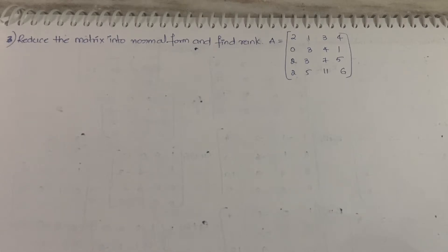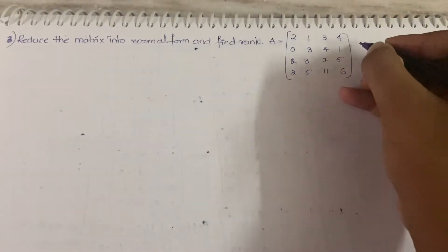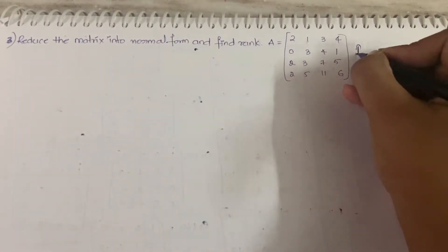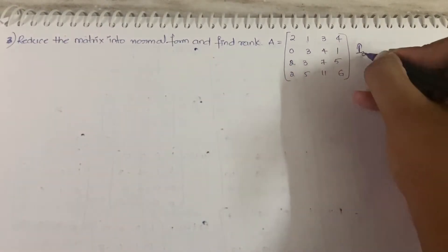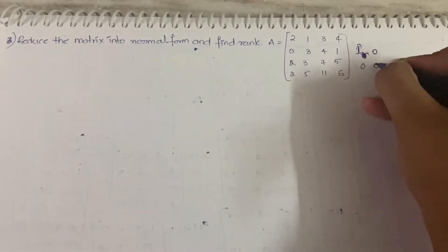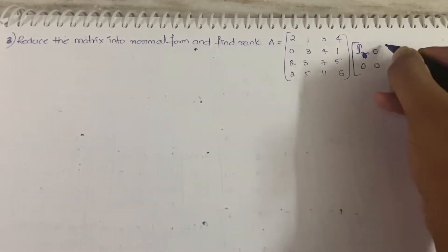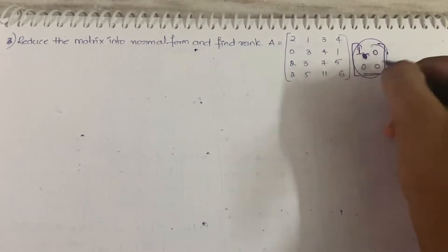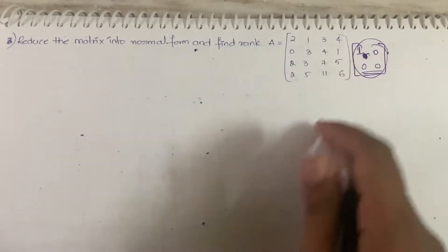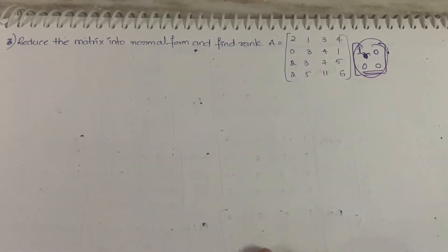You know what a normal form is — we can find rank using determinant, or using echelon form, or using normal form. In normal form, basically you have to get a matrix like I_r with zeros around it. At this stage you can stop and that is the normal form.